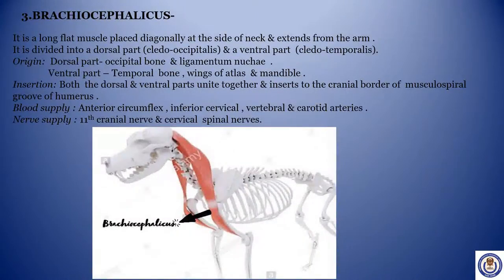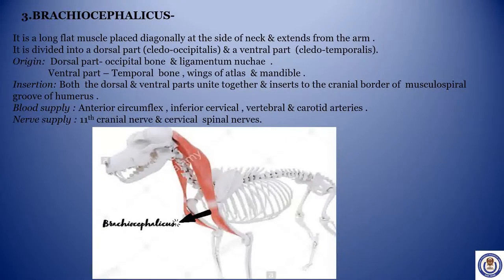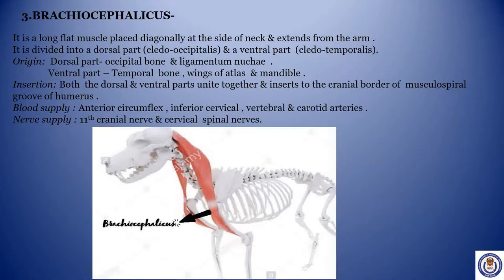Third: Brachiocephalicus. It is a long flat muscle placed diagonally at the side of the neck, extending from the arm. It is divided into a dorsal part, cleidooccipitalis, and a ventral part, cleidotemporalis. Origin — dorsal part: occipital bone and ligamentum nuchae; ventral part: temporal bone, wings of atlas and mandible. Insertion: both dorsal and ventral parts unite and insert to the cranial border of the musculospiral groove of the humerus. Blood supply: anterior circumflex, inferior cervical, vertebral and carotid arteries. Nerve supply: 11th cranial nerve and cervical spinal nerves.